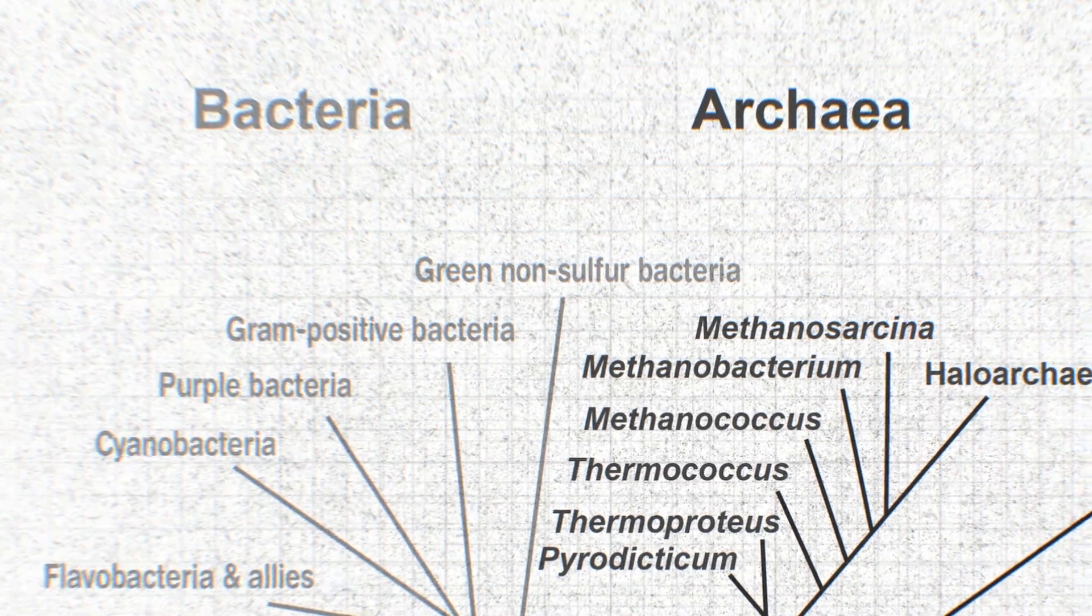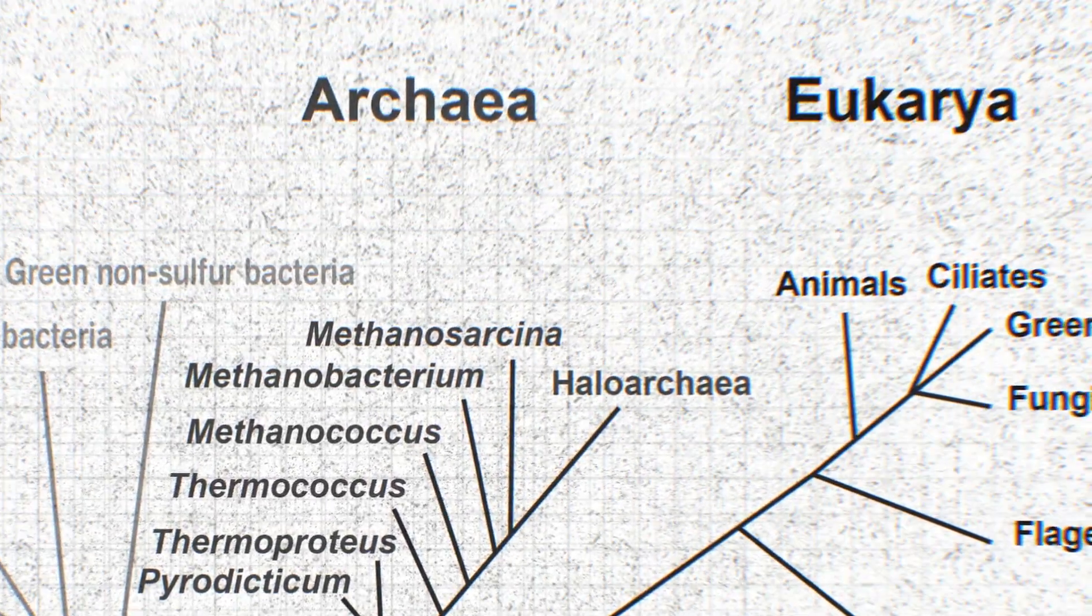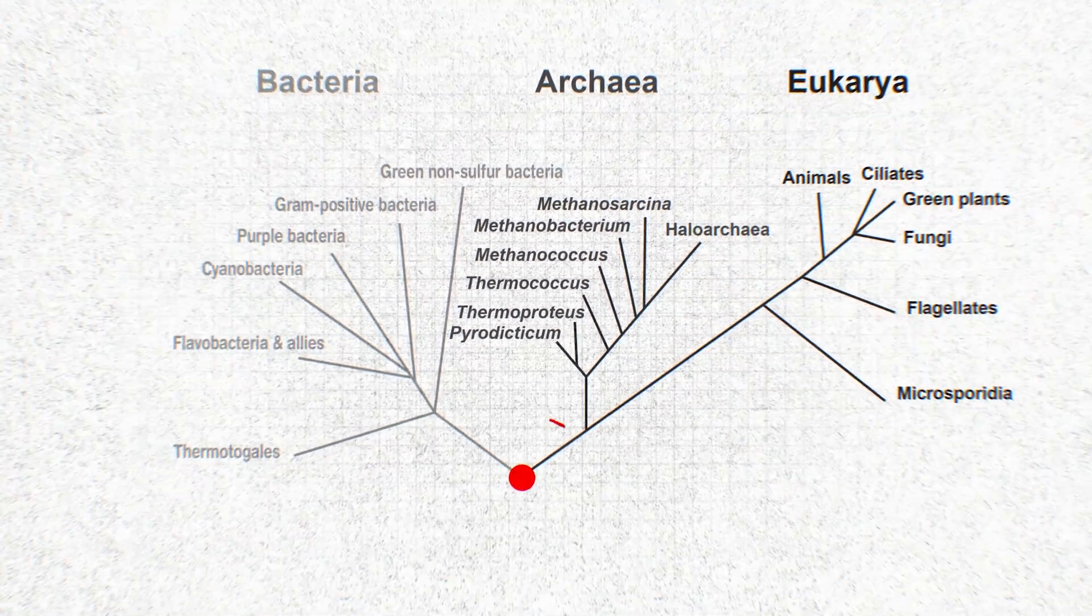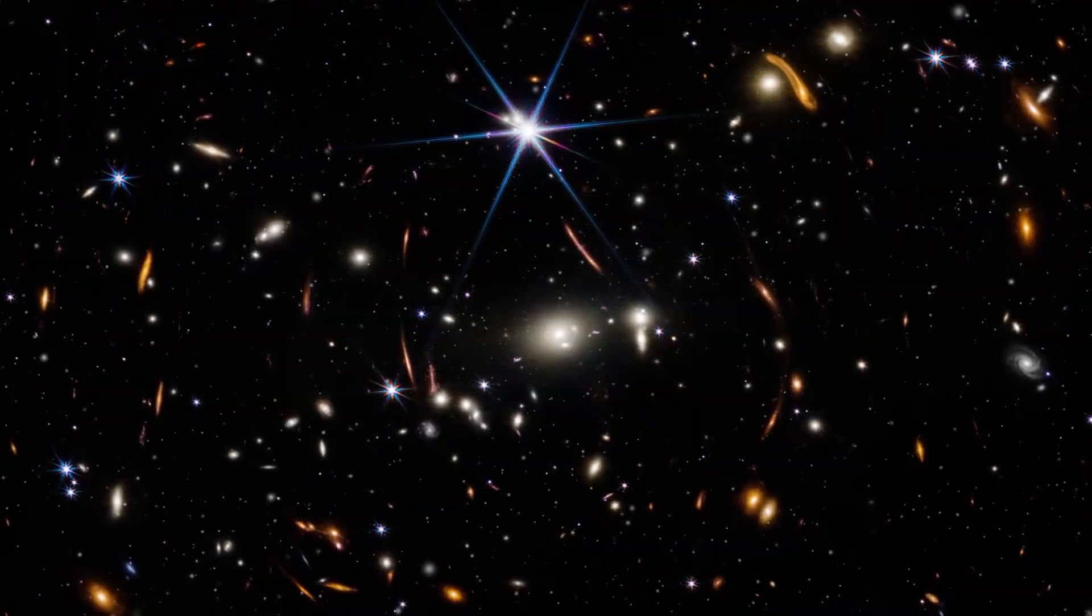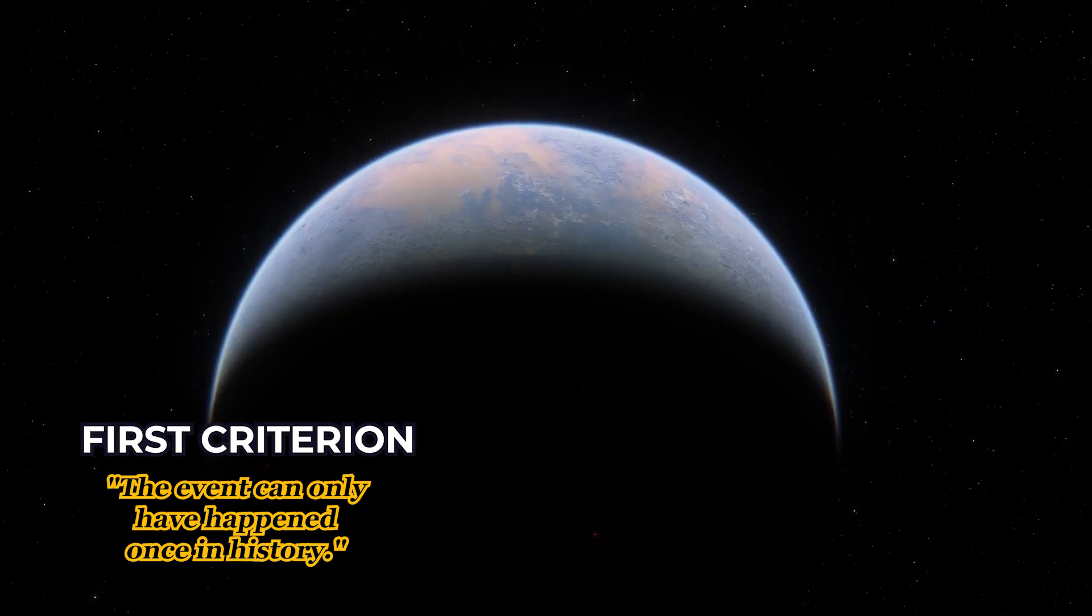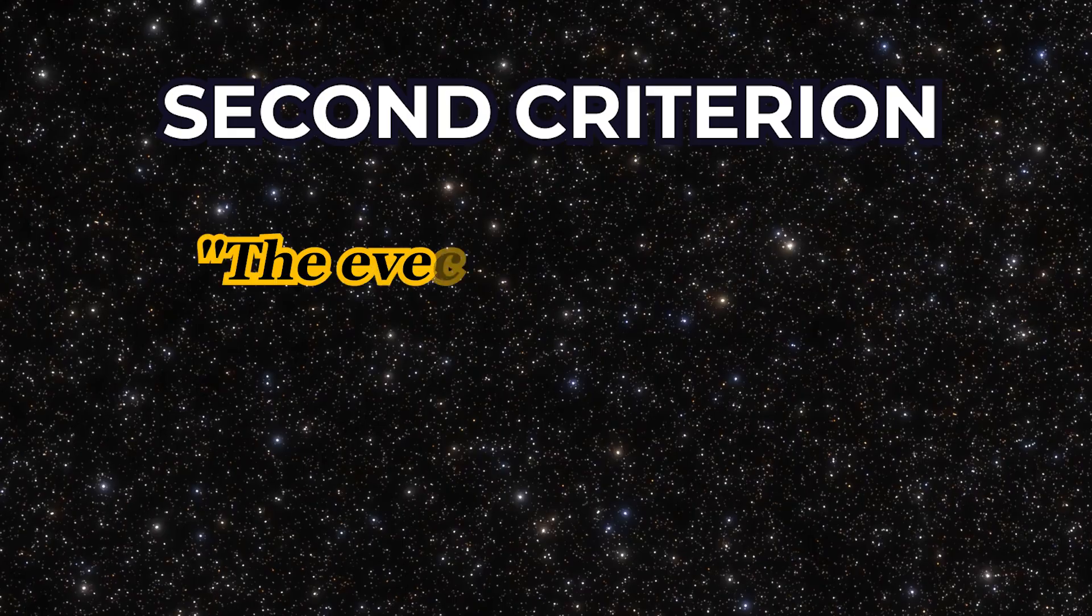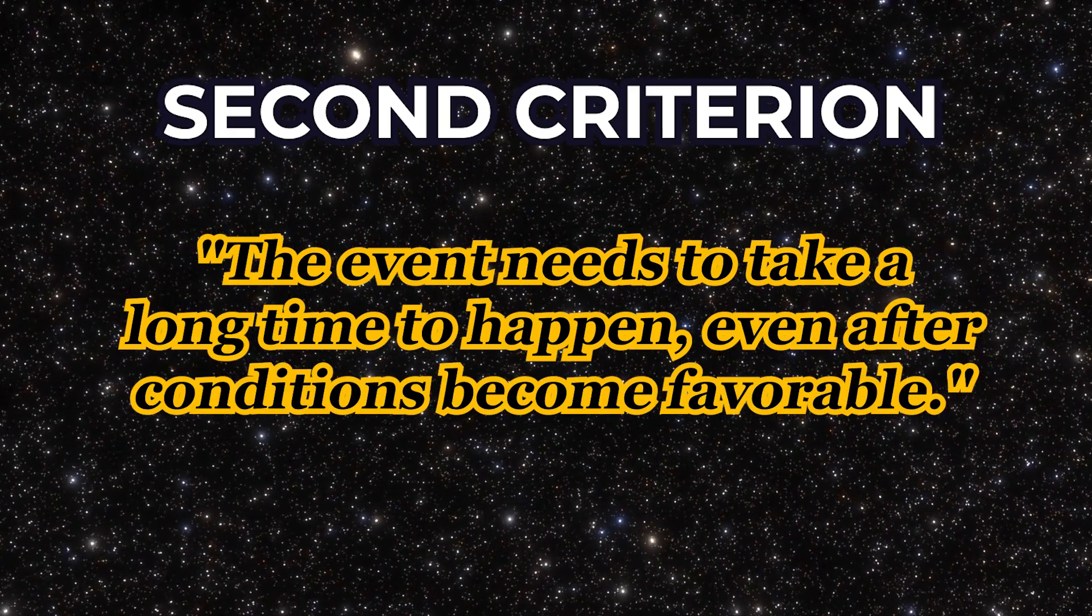And more! All living organisms on Earth today seem to be descendants of a common ancestor, which only reinforces the idea that life emerged only once on our planet. What conclusion can we draw from this? The emergence of life on Earth is a good candidate for the Great Filter, per the first criterion. But what about the second criterion, which states that the event needs to take a long time to happen even after conditions become favourable?